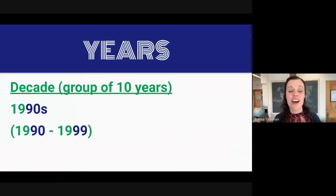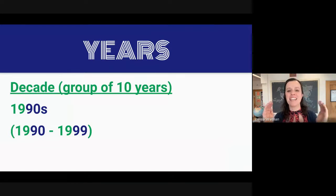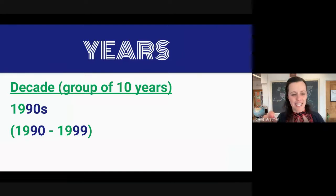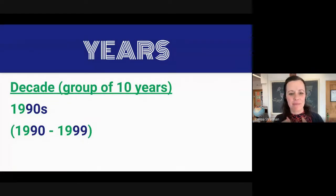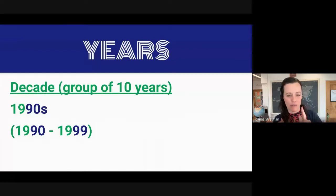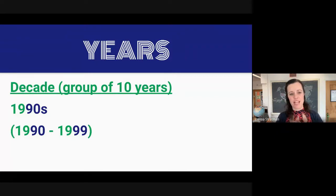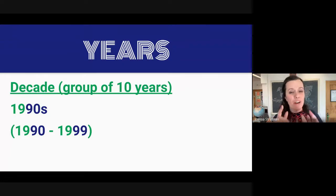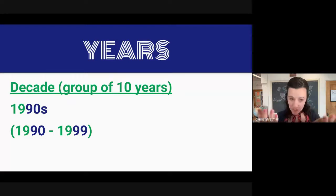First, a decade. A decade is a group of ten years. And usually when people write a decade, they write the number and then an S on the end. When you pronounce it, it is similar to a single year — you say the first two numbers together and then the last two numbers together. But now the last number is plural, more than one. For example,